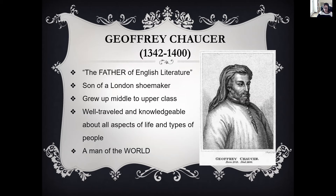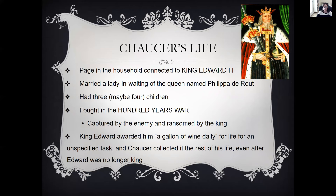He was well traveled and knowledgeable. He was a page to the Countess of Ulster, who was married to the second son of Edward the Third, so he was directly tied to the king's court. That apprenticeship was only given to sons of people who were well respected and well established in society, as those apprenticeships as pages usually led to a knighthood or a high-ranking appointment. As a page he was given many opportunities for education, fine clothing, and access to music, poetry, and other writers.